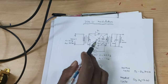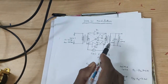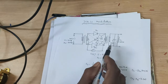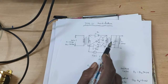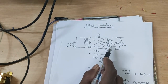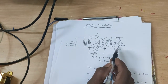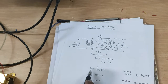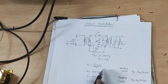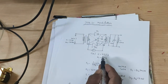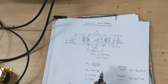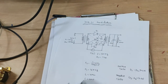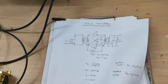The carrier signal is given to the center terminal of the two transformers, and here we are using one tuned circuit. The tuned circuit is connected to the primary winding of the second transformer. The tuning circuit values are chosen using the formula: fc = 1 / (2π√LC). Using a carrier frequency of 16 kHz, we choose L = 10 millihenry and calculate C = 10 nanofarads.